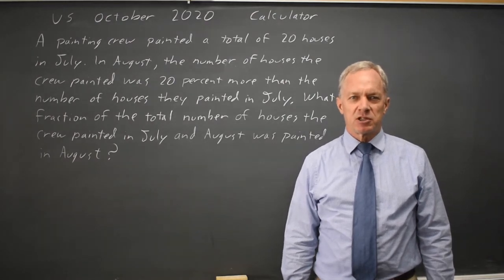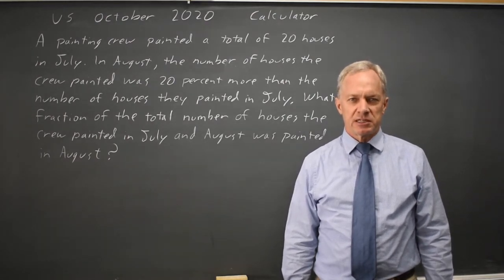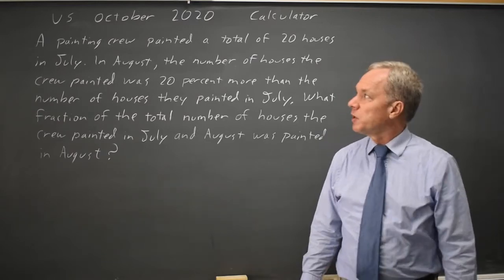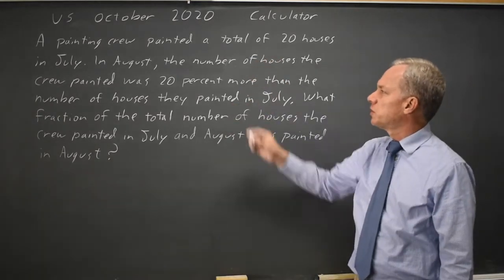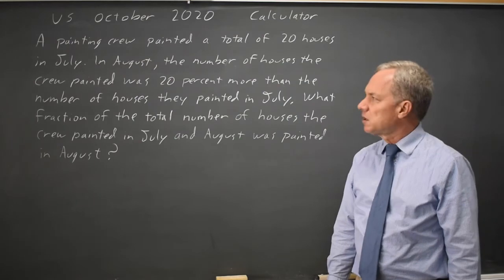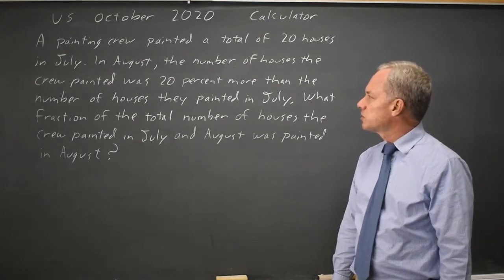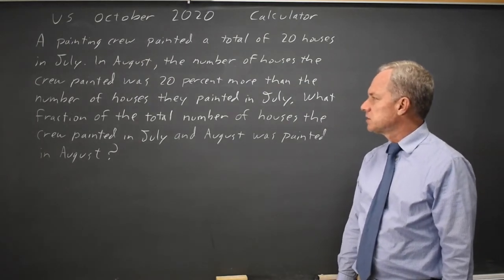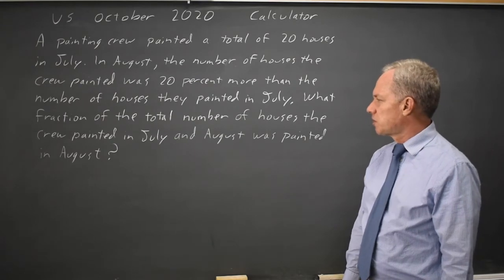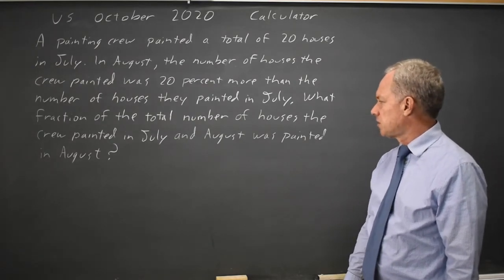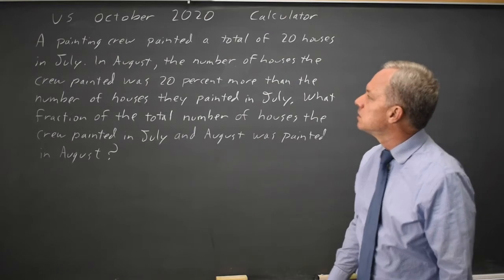I'm Dr. Roger and this question is from the October 2020 U.S. exam calculus section. We have a painting crew that painted a total of 20 houses in July. In August they painted 20% more and the question is, what fraction of the total number of houses the crew painted in July and August was painted in August?